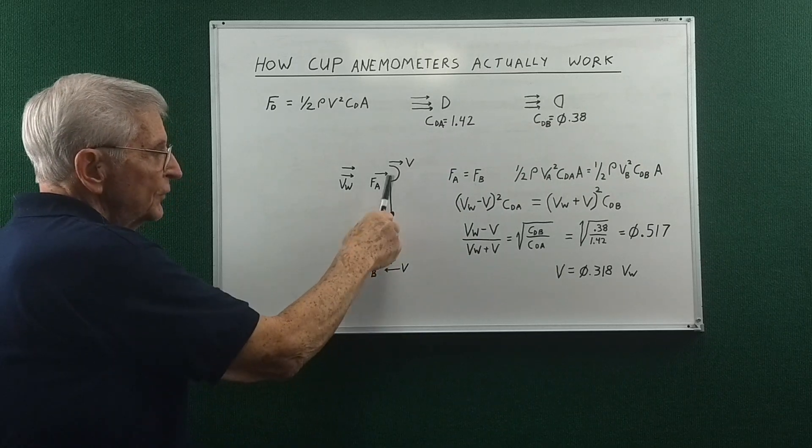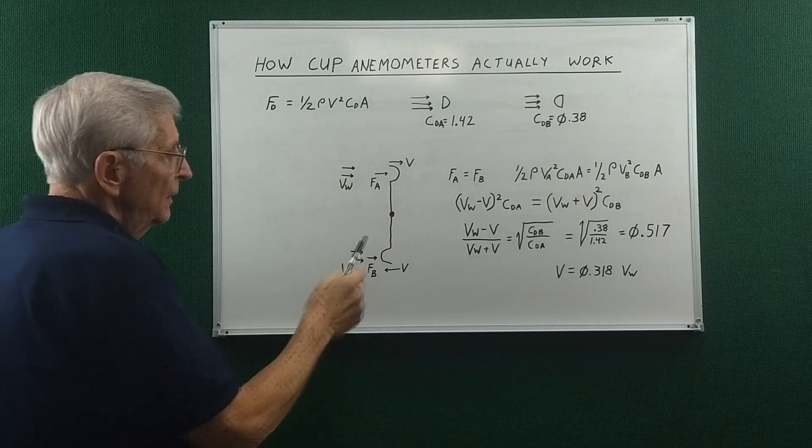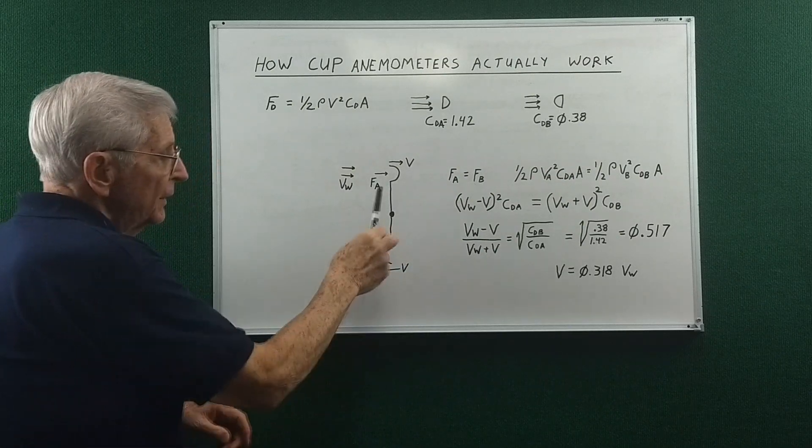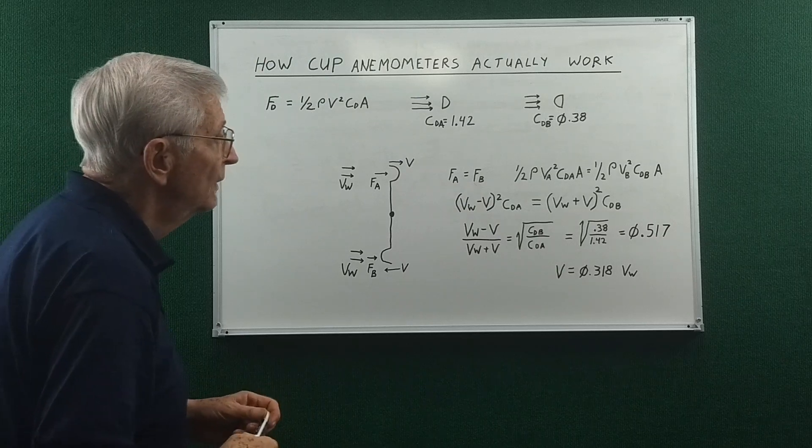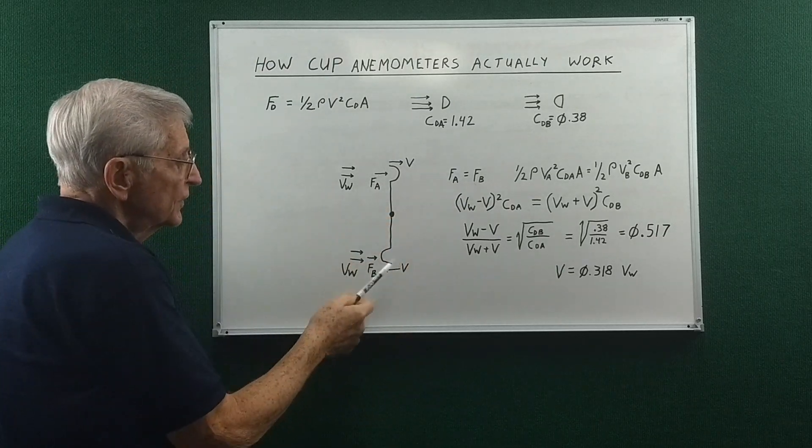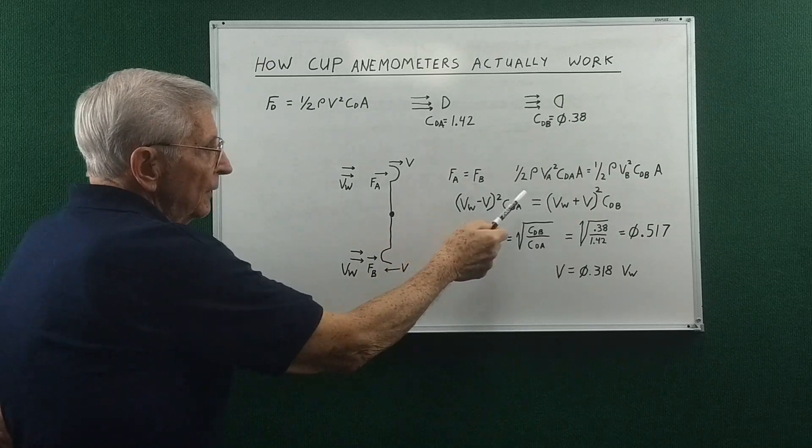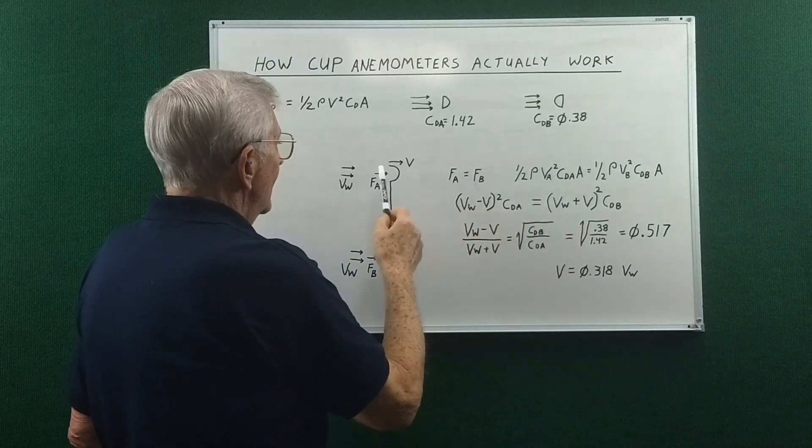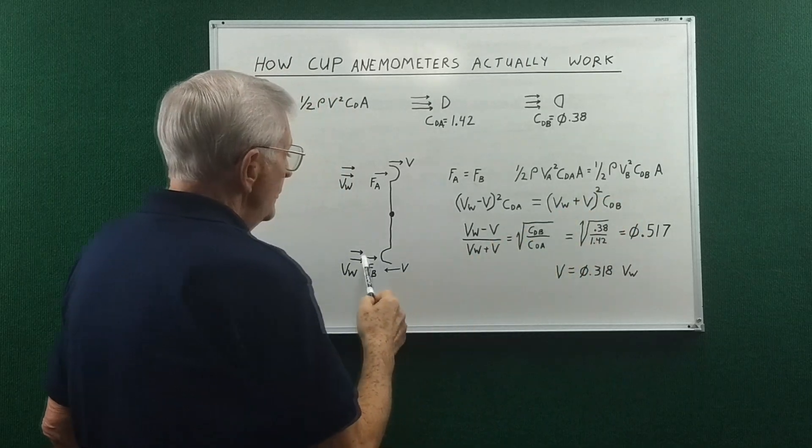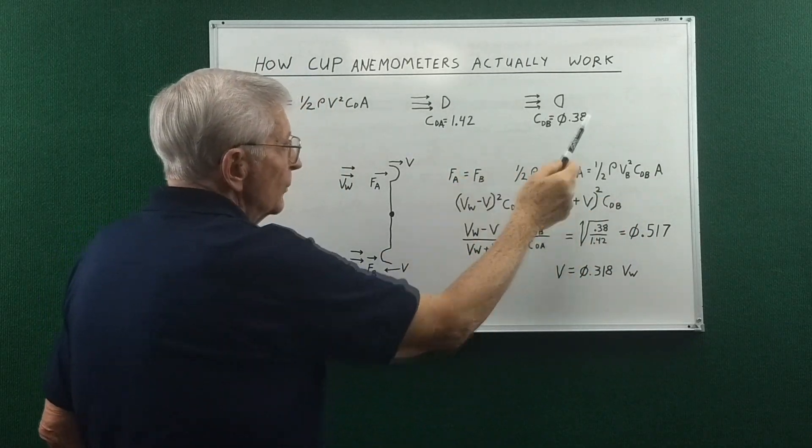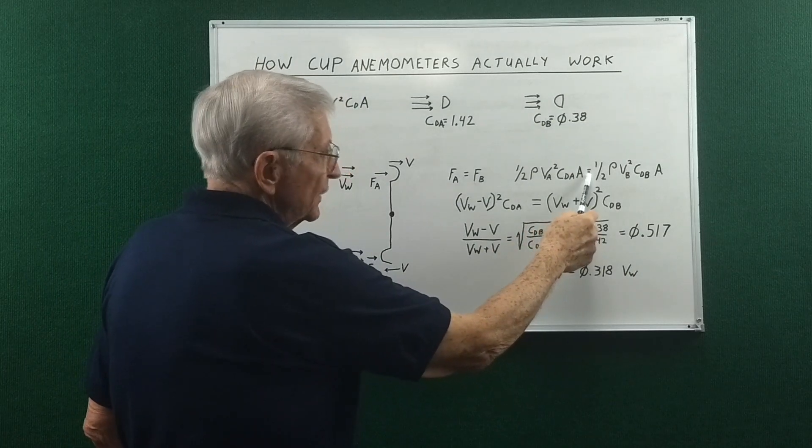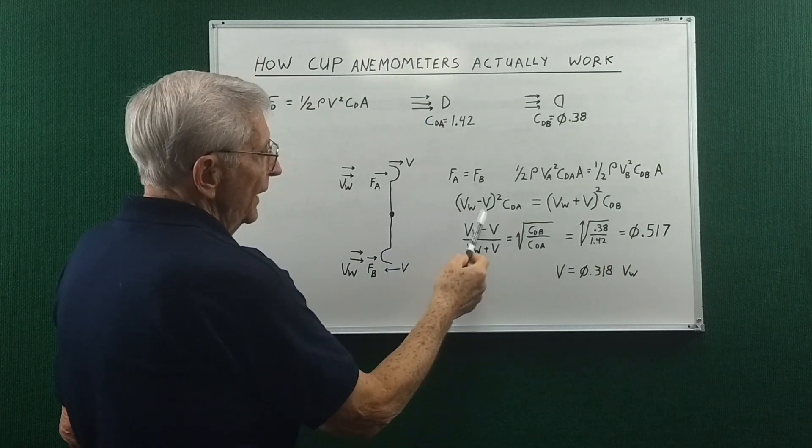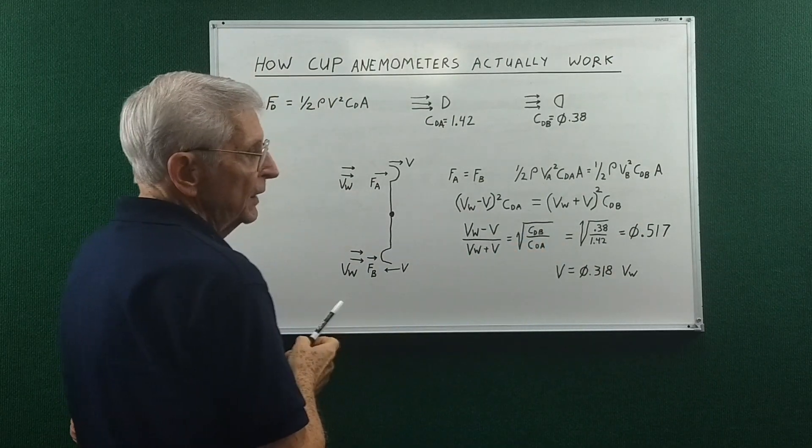When that's true, this can be turning at a constant velocity. Now remember there's two more cups out here that I haven't shown. I'm just trying to keep it simple at this point. So if we say the force A is equal to force B, then this is the coefficient of drag of A and this is the coefficient of drag of B, which are these two numbers. So there's an equal sign here. So everything pretty much cancels out and we end up with this simplification here.